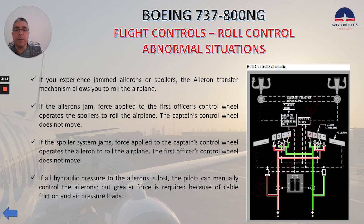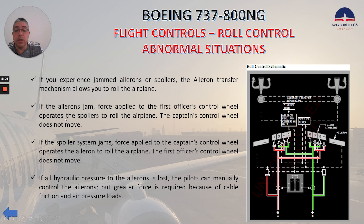Now let's talk about some abnormal situations with the roll control. If you experience jammed ailerons or spoilers, the aileron transfer mechanism allows you to roll the airplane — you can see the aileron transfer mechanism here. If the ailerons jam, force applied to the first officer's control wheel operates the spoilers to roll the airplane. The captain's control wheel does not move.